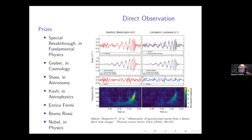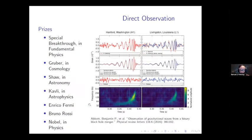The pair of interferometers in the LIGO experiment in Hanford, Washington and Livingston, Louisiana combined their signals back in 2016 to produce the first detection of a binary black hole merger that emitted a burst or chirp of gravitational waves. This result — an enormous technical feat as well as a theoretical one — engendered a number of special prizes that year.